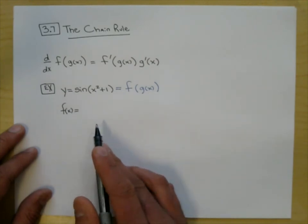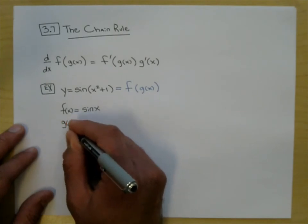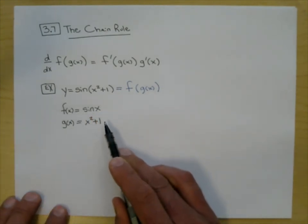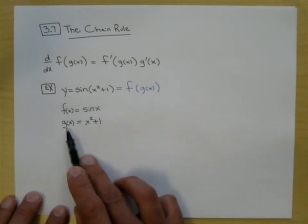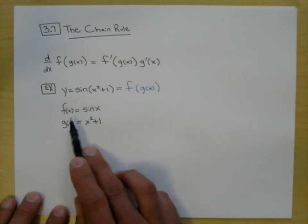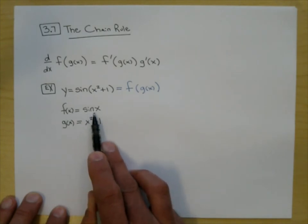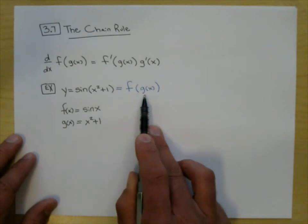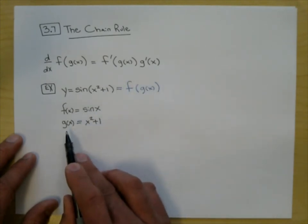So f of x is the sine of x, and g of x is the inside part, x squared plus 1. We can check: f of g of x — f of x squared plus 1 is sine of x squared plus 1. So we've set up our function as a composition of two functions. Now I need the derivatives for the chain rule.